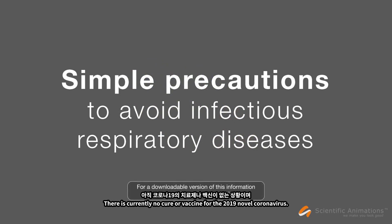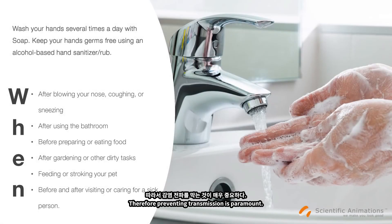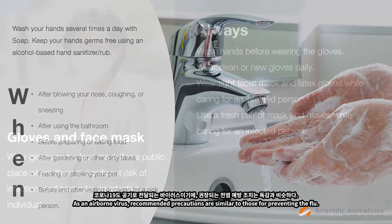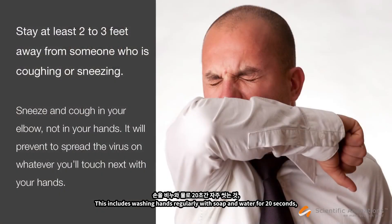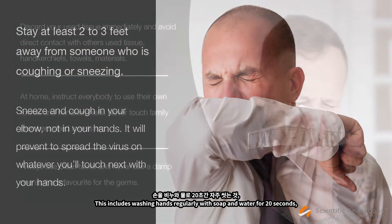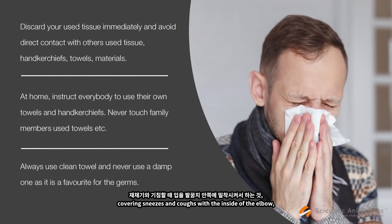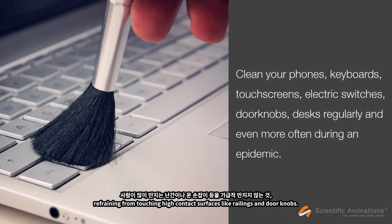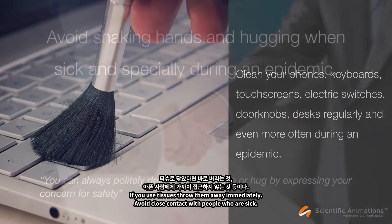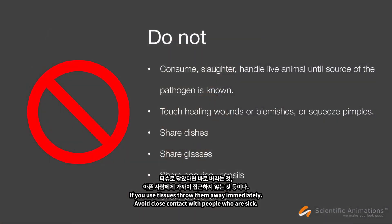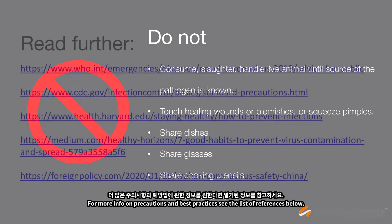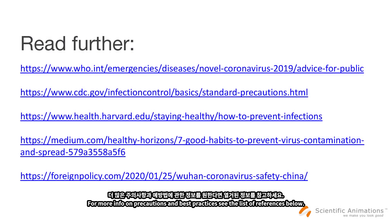There is currently no cure or vaccine for the 2019 novel coronavirus, and treatment is only supportive. Therefore, preventing transmission is paramount. As an airborne virus, recommended precautions are similar to those for preventing the flu. For more information on precautions and best practices, see the list of references below.